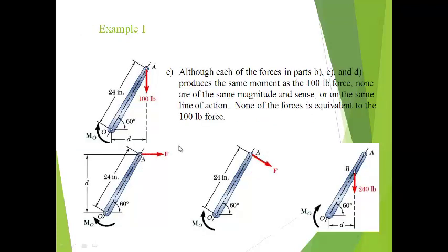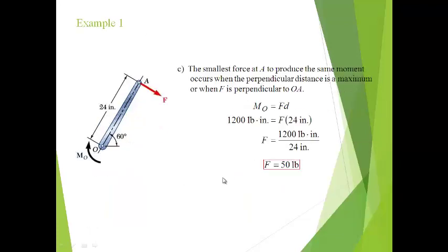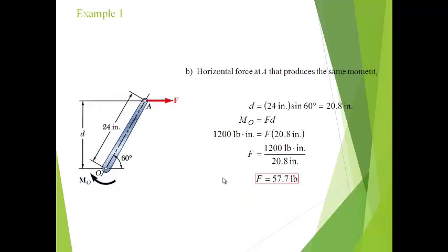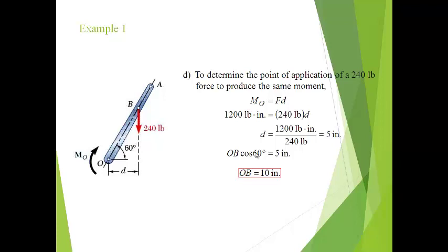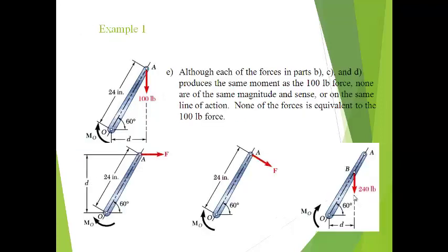For the last question: although each of the forces in parts B, C, and D produces the same moment as the 100-pound force, the force values are different — B gives 57.7 pounds, C gives 50 pounds, and D gives 240 pounds. Therefore, we can conclude none of the forces is equivalent to the original 100-pound force.